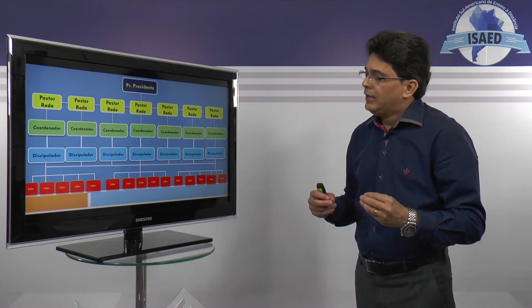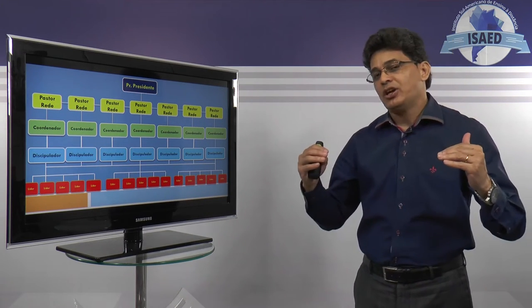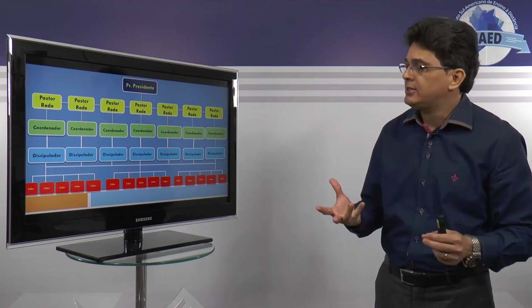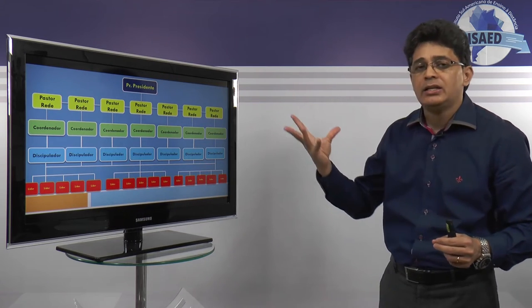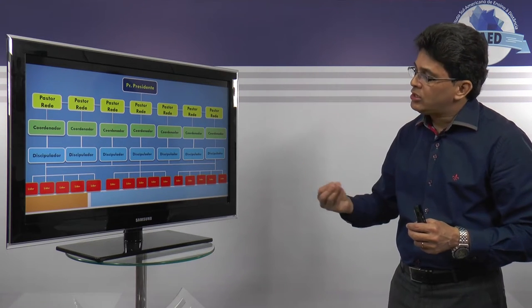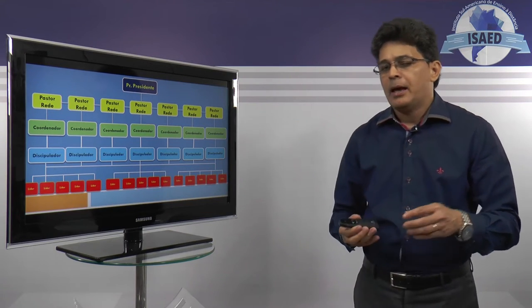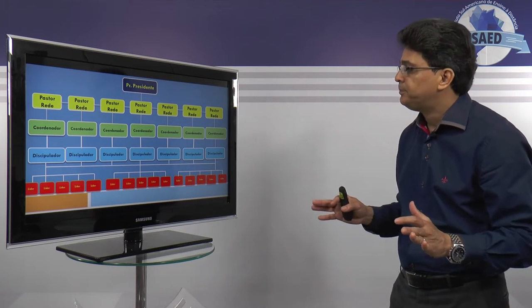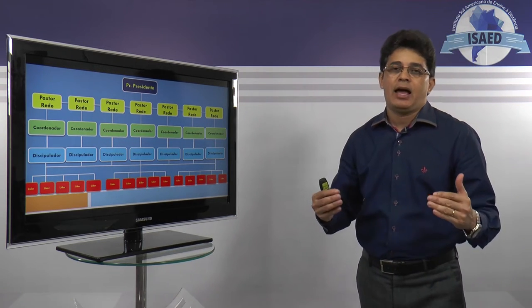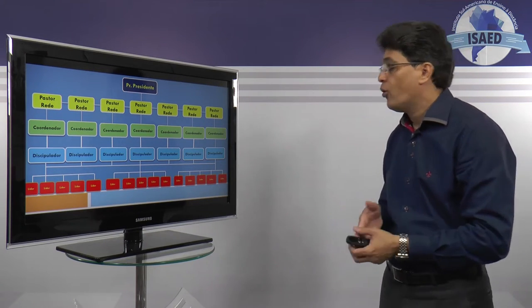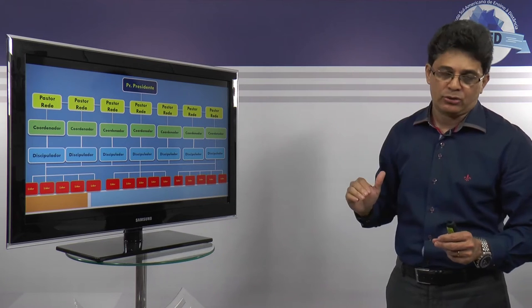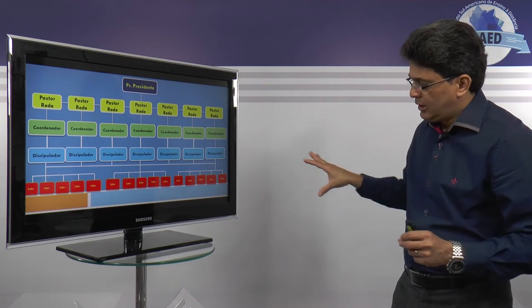Na aula anterior nós falávamos acerca de que uma igreja em células tem como base no seu organograma de funcionalidade basicamente essa estrutura: o pastor presidente, os pastores de rede, coordenadores, discipuladores e líderes em treinamentos. Mas o bem da verdade é que esse projeto ele começa de baixo para cima e não de cima para baixo.